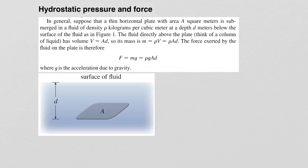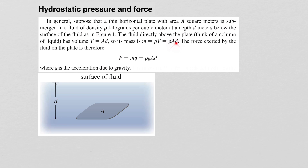Suppose that a thin horizontal plate with area A square meters is submerged in a fluid of density rho kilograms per cubic meter at a depth D meters below the surface of the fluid. The fluid directly above the plate has a volume equal to the area multiplied by the depth. So the mass is equal to rho times volume, which is rho times area times depth.